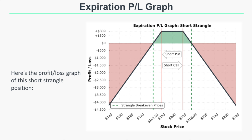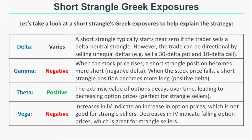Let's look at the option Greek exposures for a short strangle. In terms of delta, you can structure a short strangle to be completely delta neutral or slightly directional. For example, if you sell a 20-delta put and a 10-delta call, you'll be net long because you sold a put with a higher delta than the call. So while a short strangle is generally neutral, you can structure it directionally by selling a call or put with a higher delta than the opposing side.